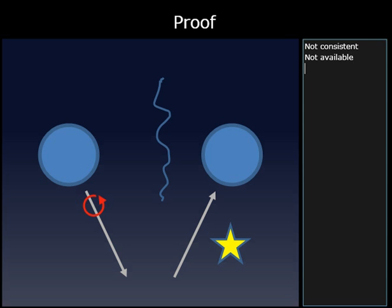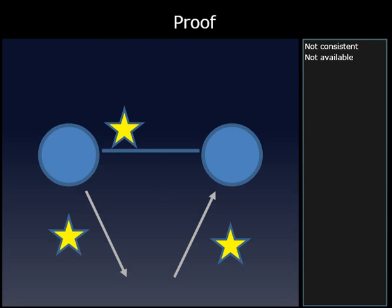Or what's the third thing that can happen? The third thing that can happen is, of course, the message actually does get through. So now I can be consistent, I can be available, but those two promises are dependent upon the network not being partitioned. So I'm not partition tolerant.